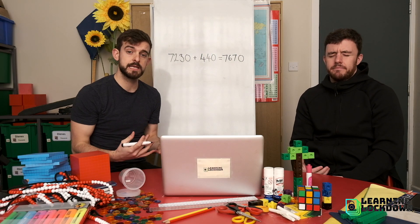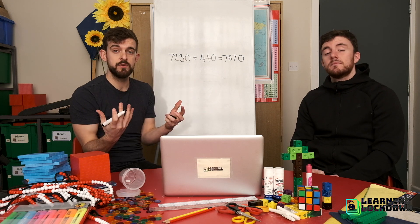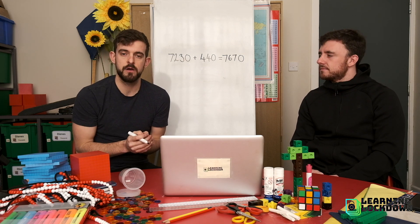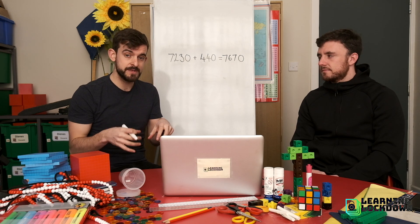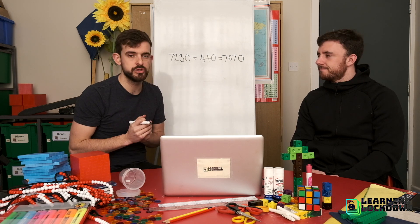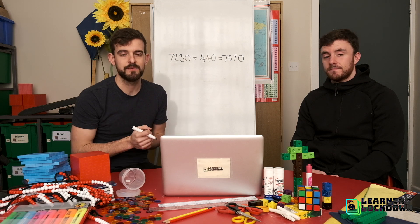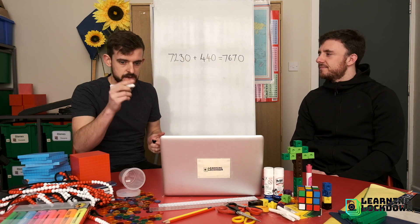Again, we don't need to write this down because the numbers won't need regrouping. We won't have more than ten lots of any of our place value columns. So on level four down below there are a number of them down there where only the tens and the hundreds change. Can you go and find them and work them out mentally? Off you go.